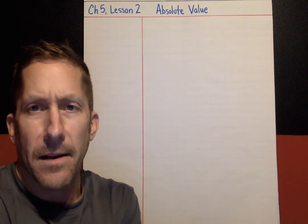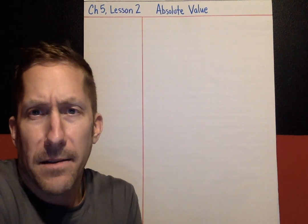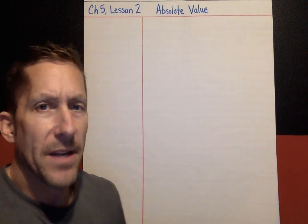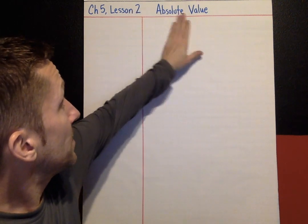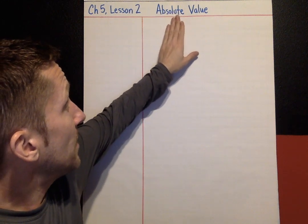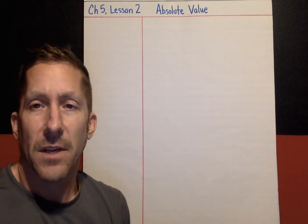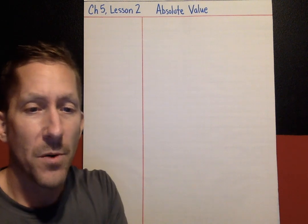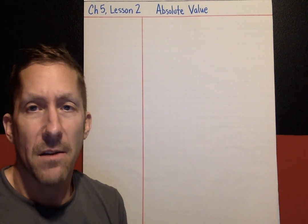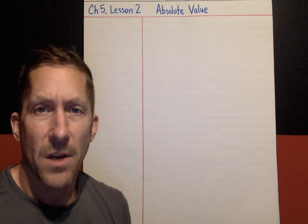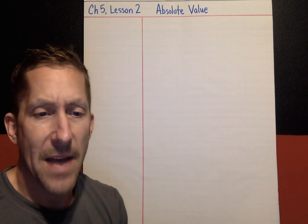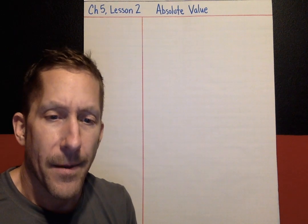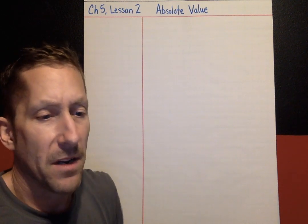Hi again, kids. This is Chapter 5, Lesson 2 on your Cornell Note page. Fill this out. Our topic today is absolute value. The idea of absolute value is new for most sixth graders — when I say absolute value, you probably don't know what that means. After today, that should change. Okay, let's get right to it.